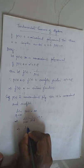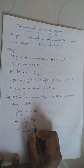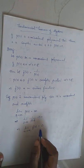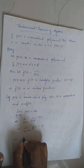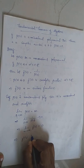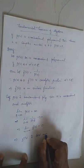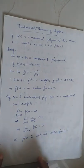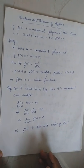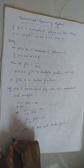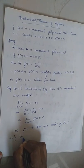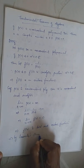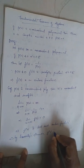So the limit as Z tends to infinity of F(z) = 1/P(z) is equal to 0. This means F(z) is bounded. So F(z) is a bounded entire function. By Liouville's theorem, when a function is bounded and entire, it must be constant. So by Liouville's theorem, F(z) is constant.